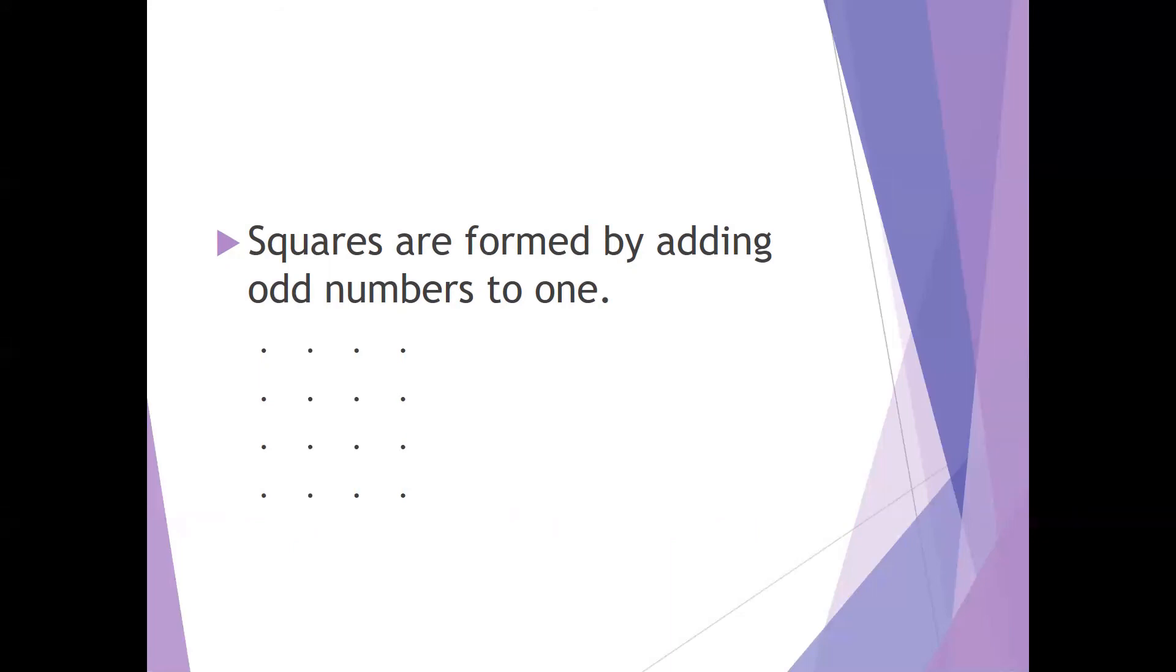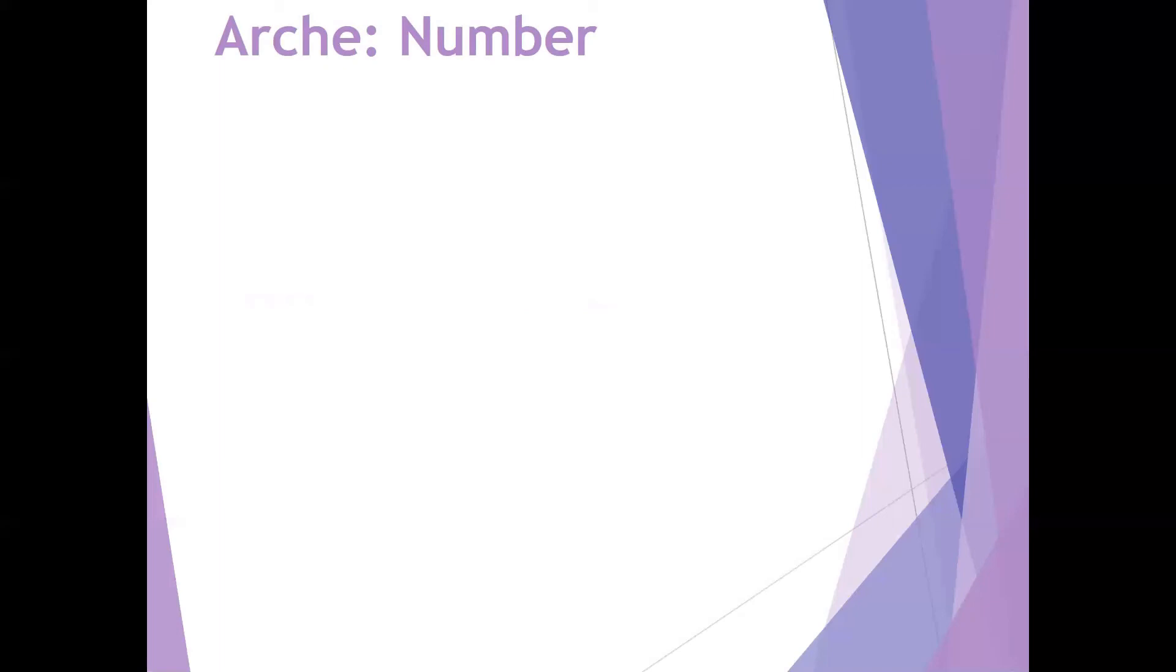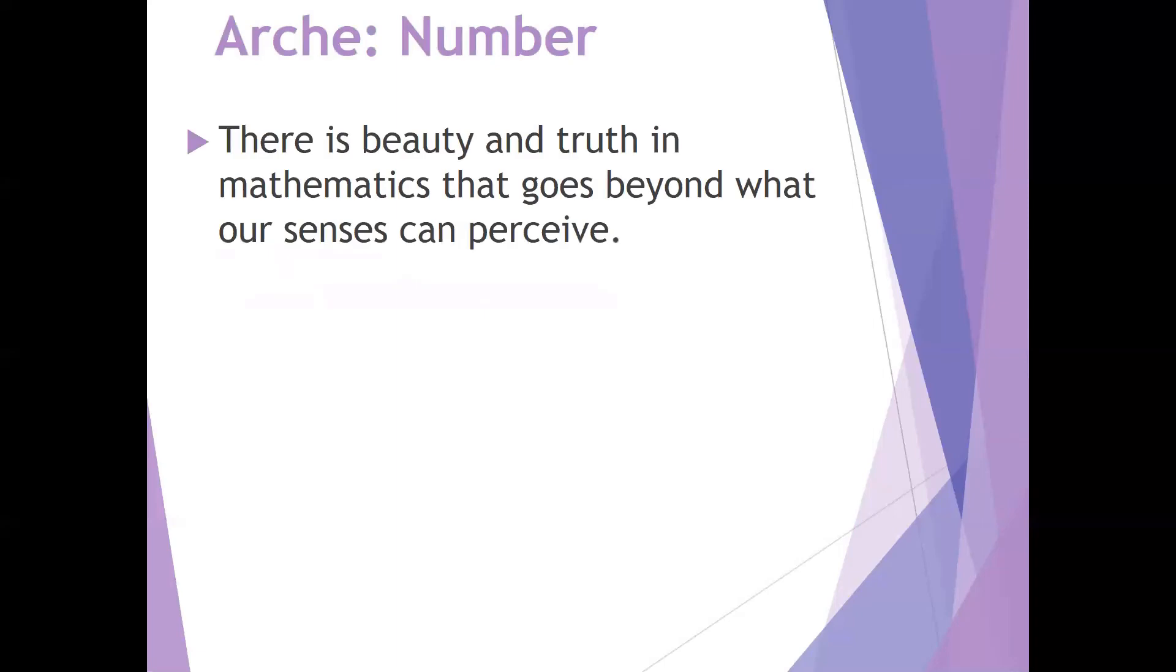So for the Pythagoreans, insofar as they would identify an arche, it would be number. And there is beauty and truth in mathematics that goes beyond what our senses can perceive. This idea of the tetractys, of forming squares, of ratios. This is getting us into this other realm that is permanent, right? And it acts with necessary relationships.